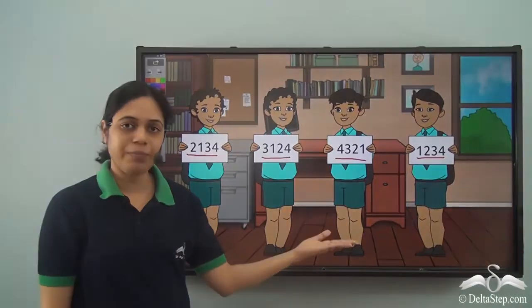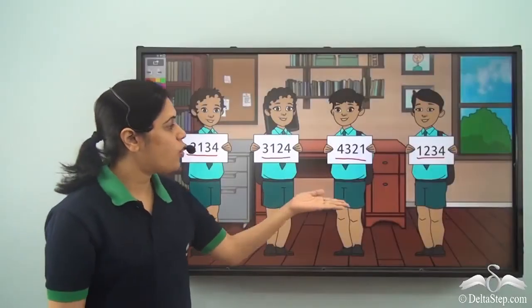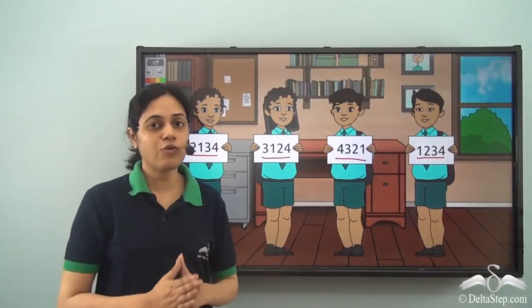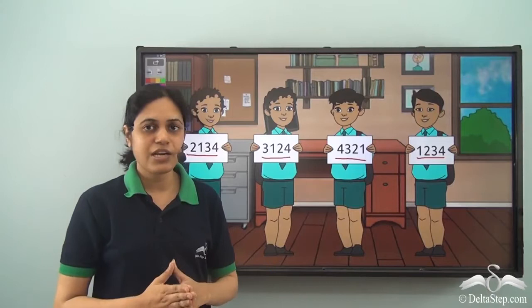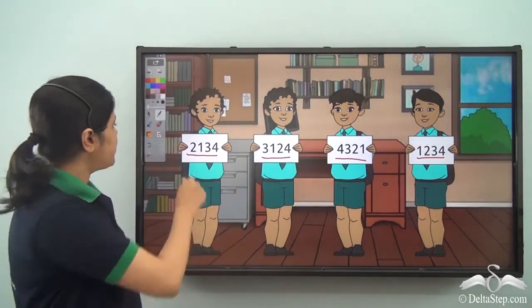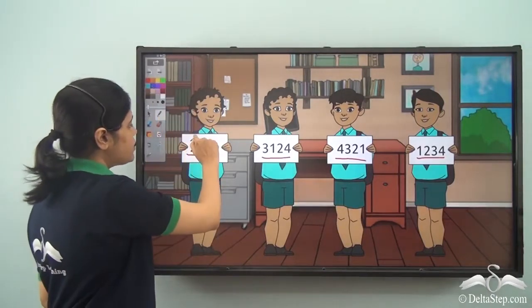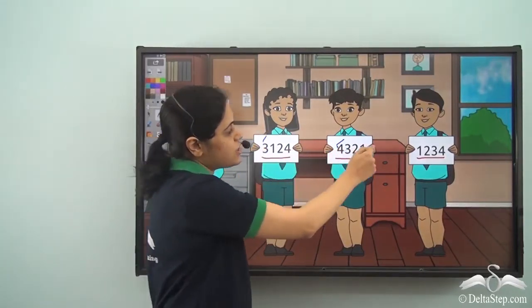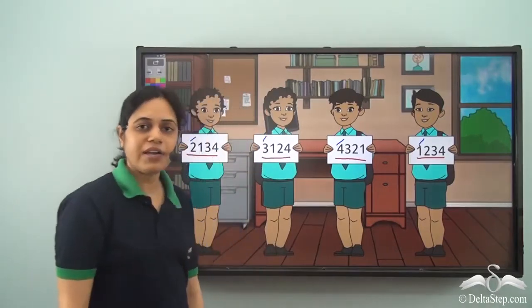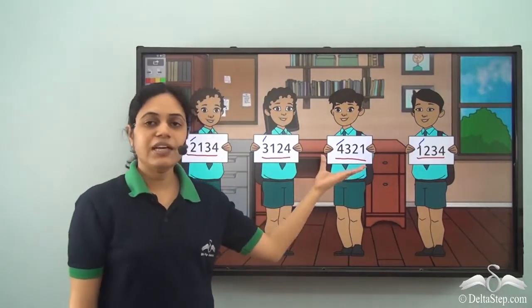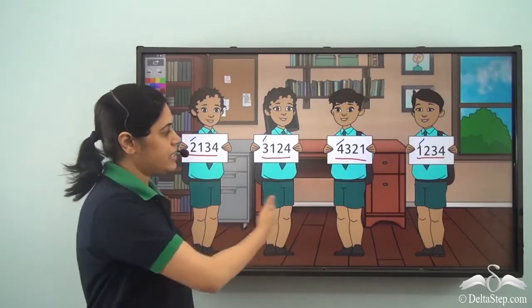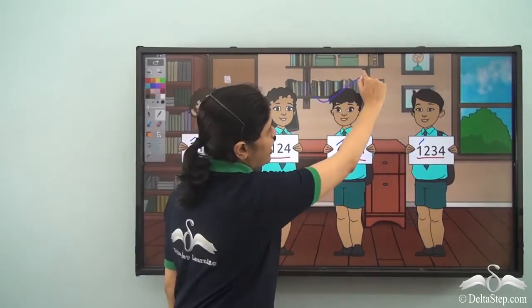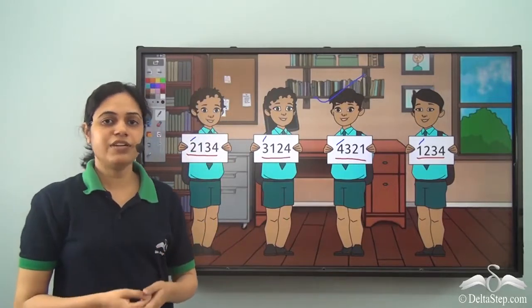As you can see, all the numbers have four digits. So the number whose thousands digit is the greatest will be the greatest number. The thousands digits are 2, 3, 4, and 1 respectively. So obviously the number with 4 as the thousands digit is the greatest, and that boy was the winner.